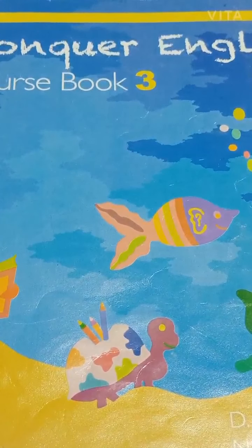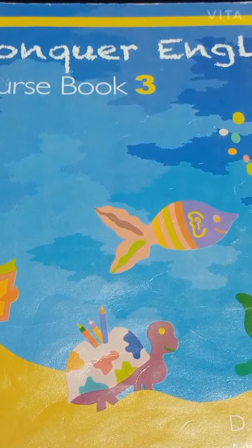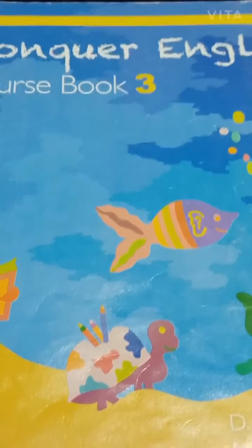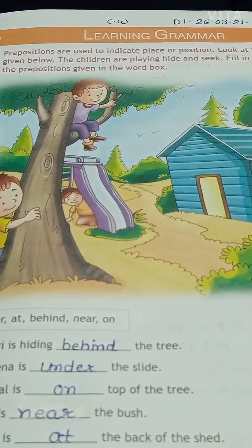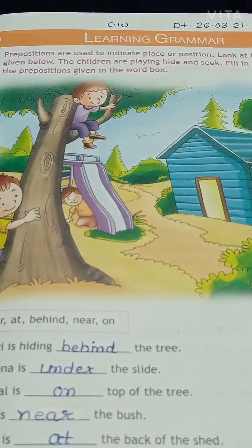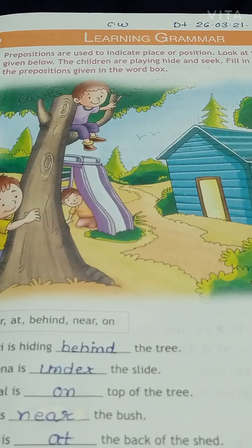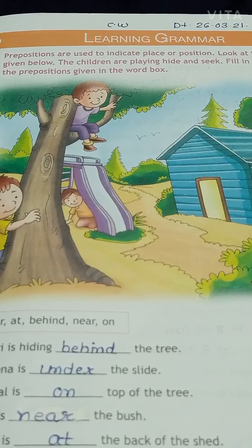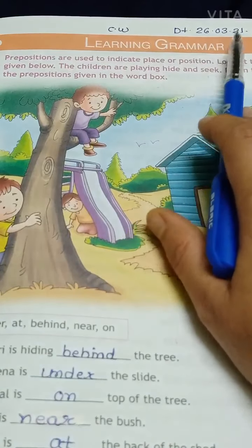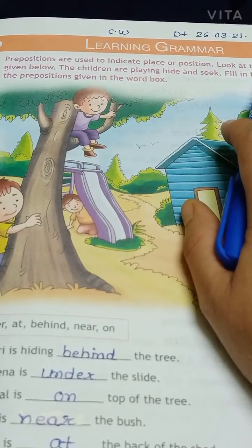Good morning dear students. How are you today? I hope you are fine at home. Welcome back to English class. Today we are going to start learning grammar. In this period we will learn about prepositions. Now let's start with page number 101. Please take your pencil. Write CW and today's date is 26th March 2021 and day is Friday.